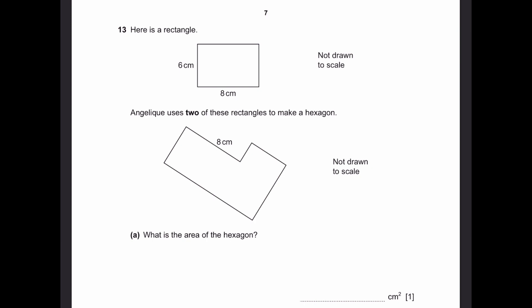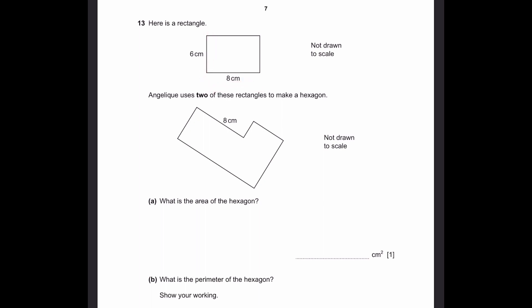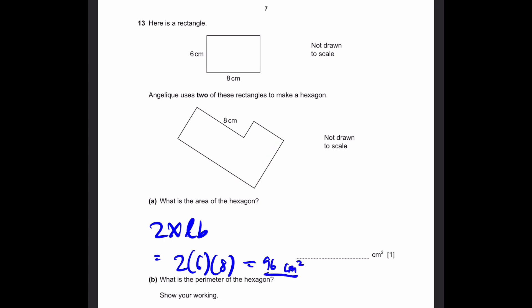Let's go to question 13. Here's a rectangle. Ansley uses two of these rectangles to make a hexagon. The rectangle has dimensions of 6 and 8 centimeters. What is the area of the hexagon? Since she uses two of these rectangles, the area is going to be 2 times length times breadth — that's simply 2 times 6 times 8, giving us 96 centimeters squared. That's our answer.